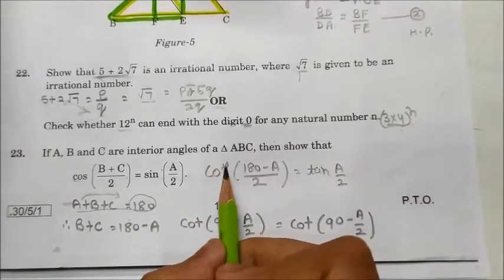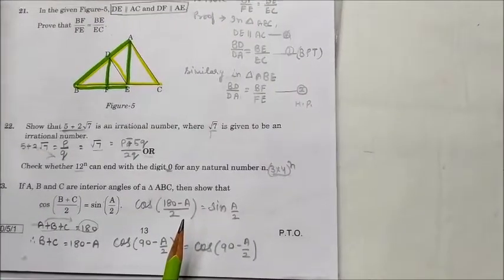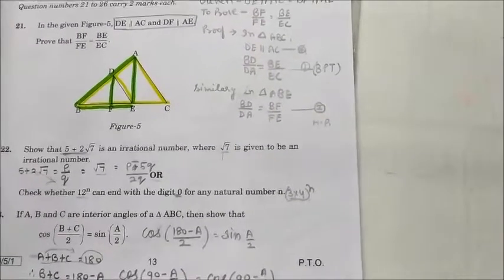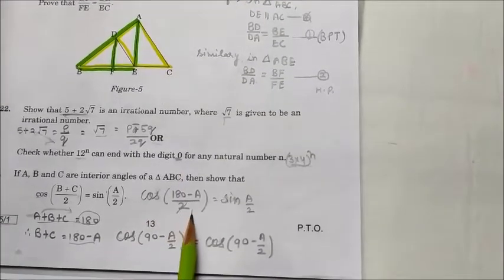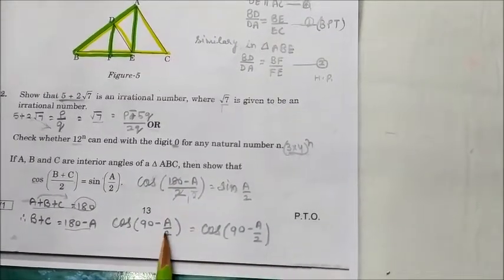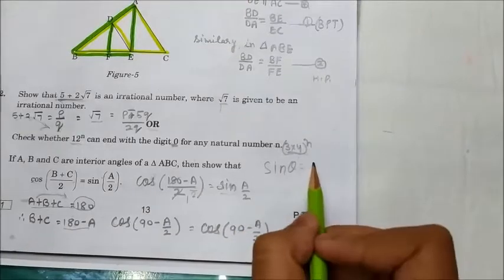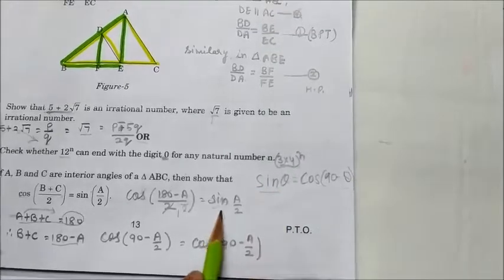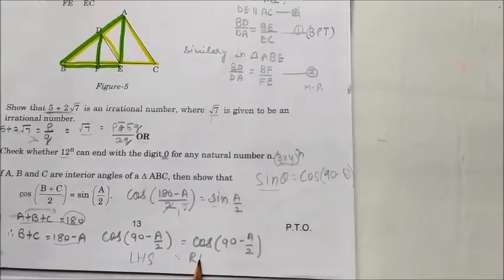We substitute: cos((B + C)/2) becomes cos((180° − A)/2), which equals cos(90° − A/2). Using the identity cos(90° − θ) = sin θ, this equals sin(A/2). Therefore LHS equals RHS, hence proved.